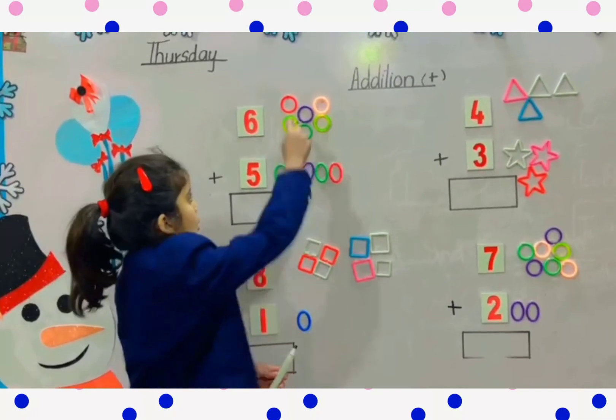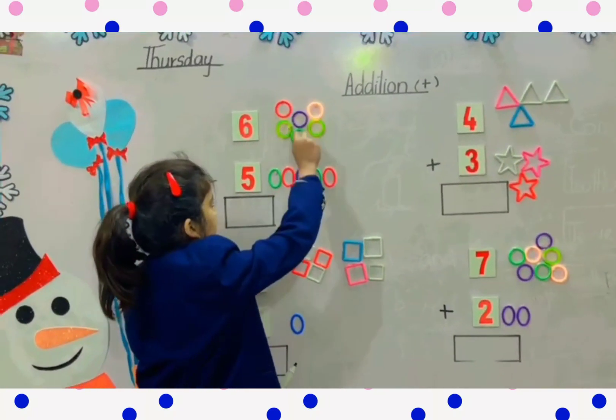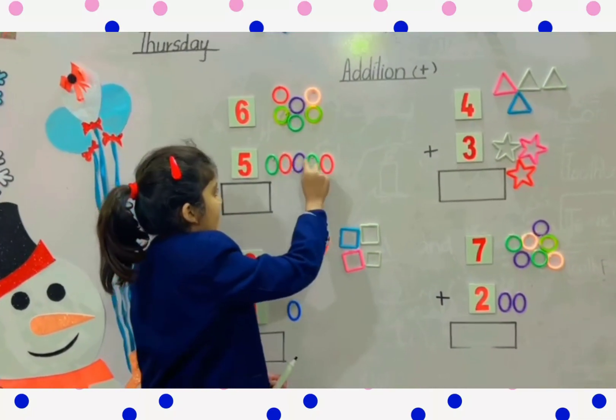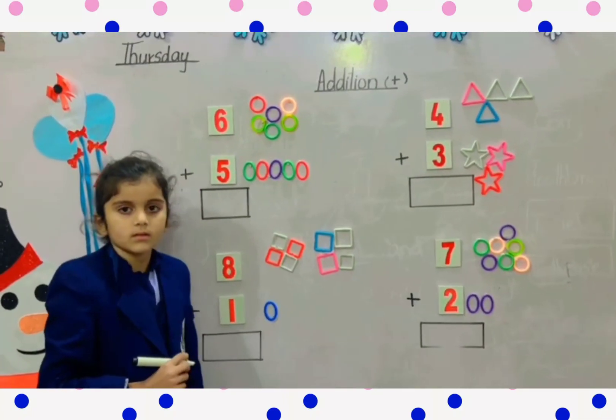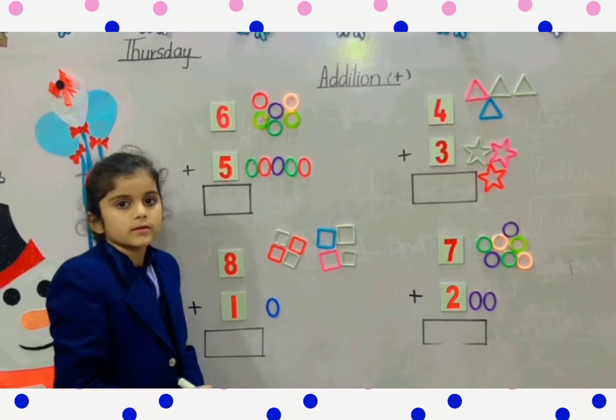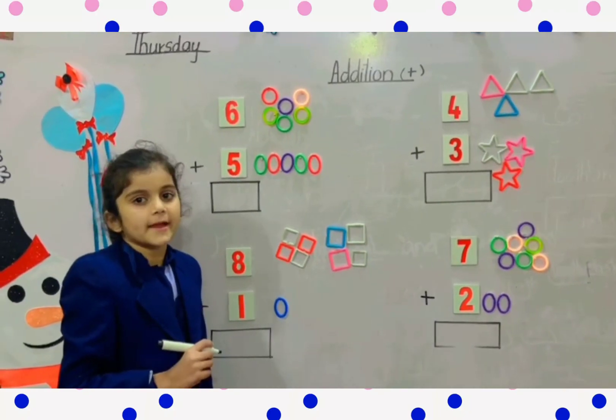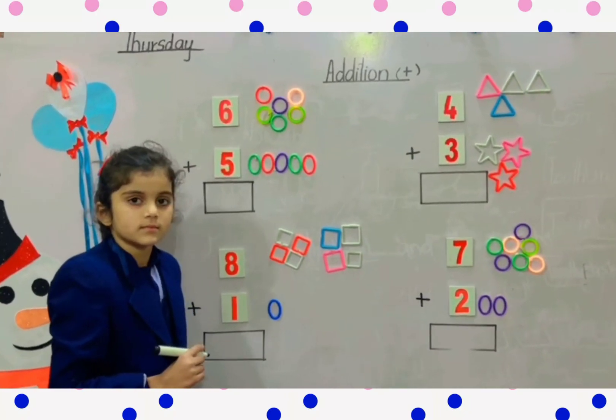Now count all together. How many total shapes are there? Eleven shapes. Very good. Now write the answer.